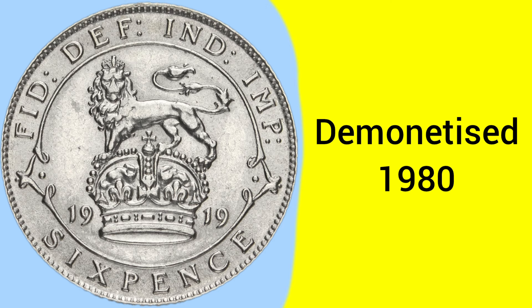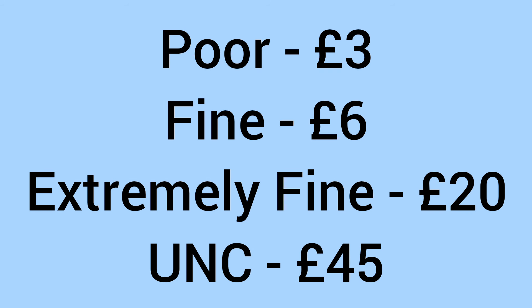The coin was demonetised in 1980, after serving as a two and a half pence piece for a while after decimalisation. Now, onto the value for a collector today: it'll sell for around £3 in poor condition, around £6 in fine condition, about £20 in extremely fine condition, and up to £45 in uncirculated grade.